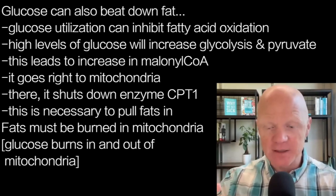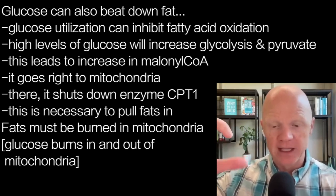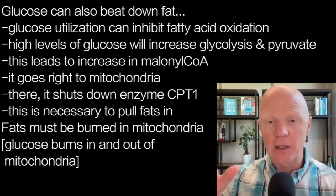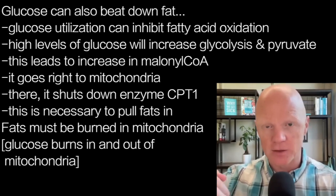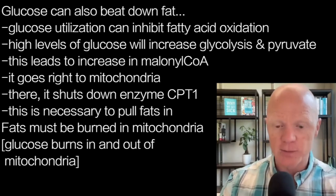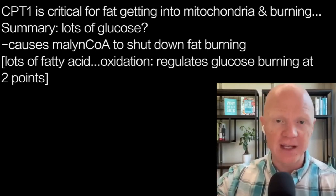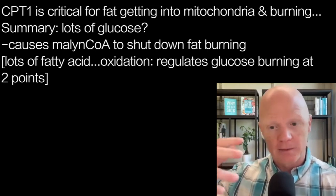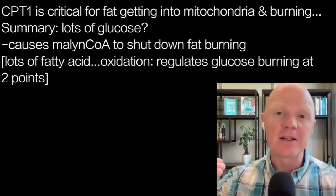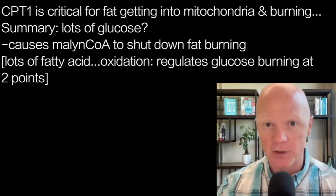Fats need to be burned in the mitochondria, whereas glucose has both an external and internal mitochondrial burning. PDH — the pyruvate dehydrogenase complex — is the intermediate that allows glucose to progress from burning outside the mitochondria to finishing all of its burning inside. CPT1 is how fats get burned at all. If you can't get a fat into the mitochondria, it's not burning. So when you have a lot of glycolysis, you produce a lot of malonyl CoA, which shuts down that entrance enzyme and the fats can't get in to be burned.